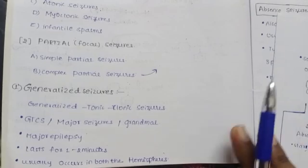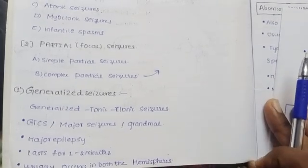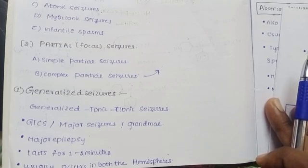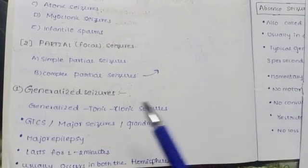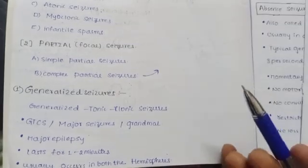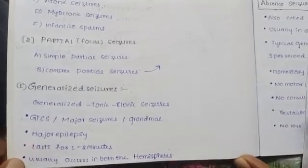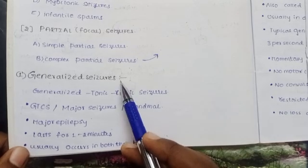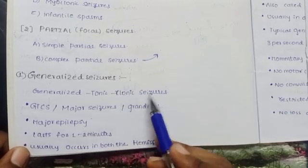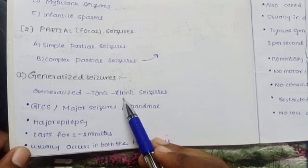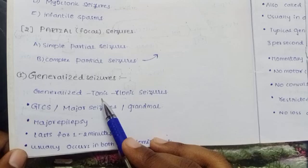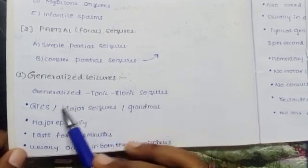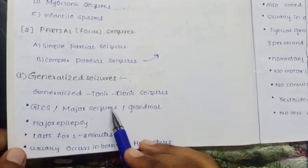Now for 10-mark questions like 'what is epilepsy, what is seizure, classify seizures, and classify antiepileptic drugs,' we need to explain each type individually. Partial and generalized both have subtypes. So now we will discuss those types in detail. Generalized seizures affect the whole brain. Generalized tonic-clonic seizures: tonic means constriction, clonic means jerk movements. First constriction occurs, then jerk movements — that is generalized tonic-clonic seizures, also called GTCS.